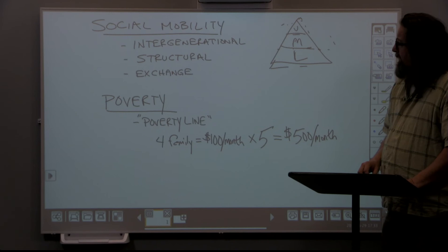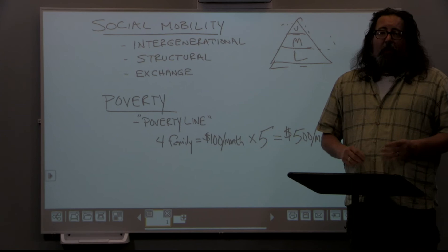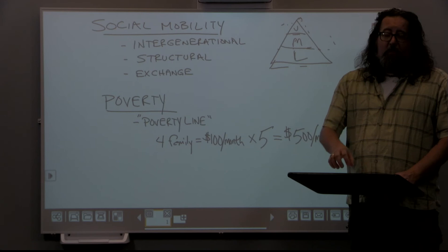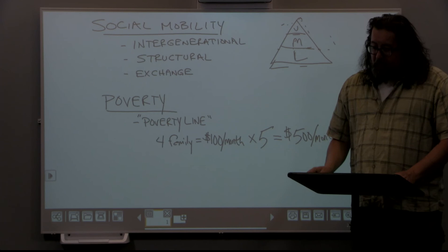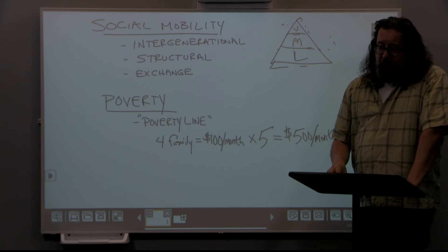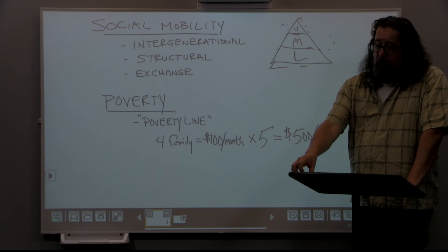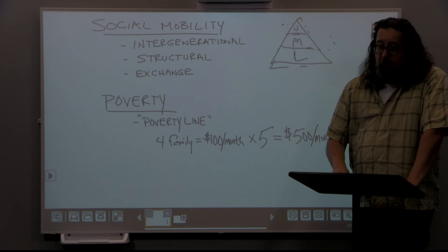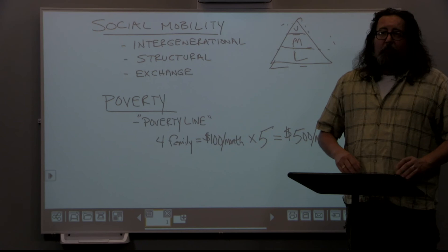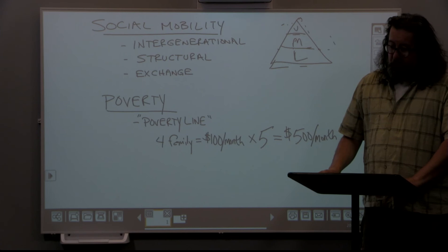The poverty line also doesn't recognize broad sweeping changes in the economy, and is considered a national standard that doesn't account for how conditions of poverty vary from place to place in the United States. When talking about poverty in the United States, it's important to rely on factual information rather than common sense or stereotypes. The textbook chapter includes a quiz that challenges stereotypes and presents factual information about who the predictors of poverty are in our society.